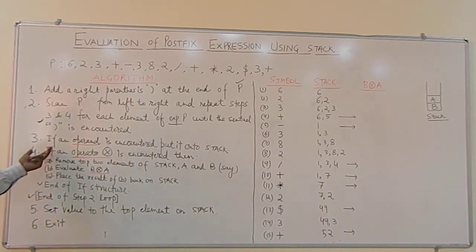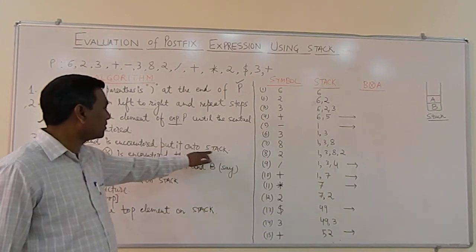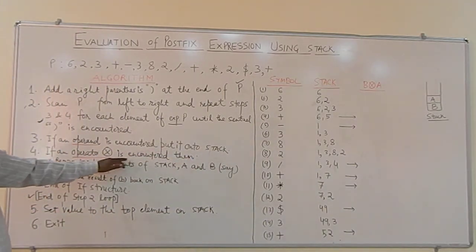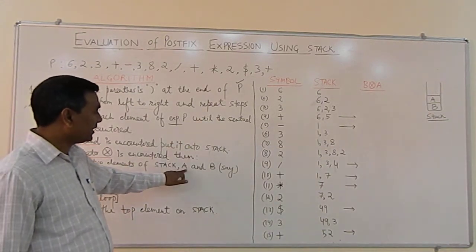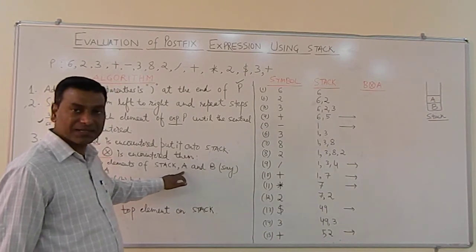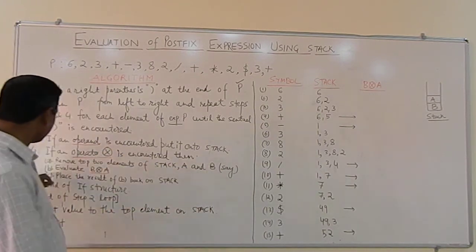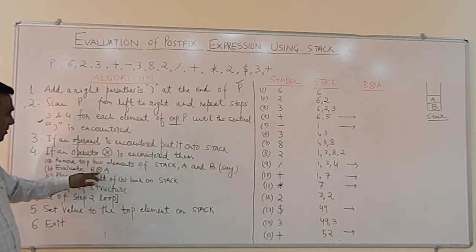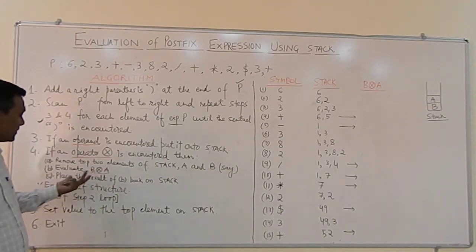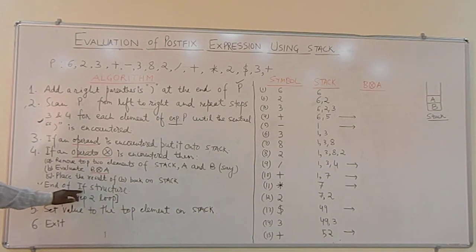In Step 3: if an operand is encountered, push it directly onto the stack. If an operator is encountered, then follow these three sub-steps. Step A: remove the top two elements of the stack — let us say these two elements are A and B, where A is the top of the stack and B is next to top. Step B: evaluate B operator A. Step C: place the result back onto the stack. This is the end of the if structure.